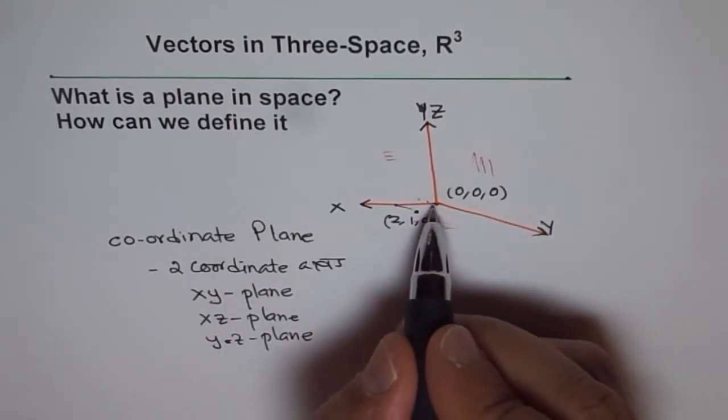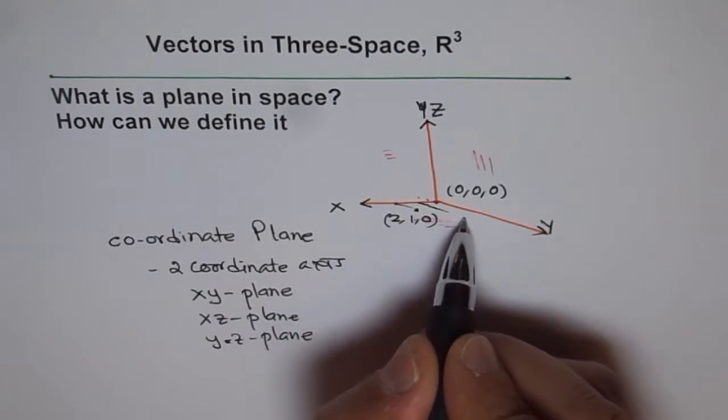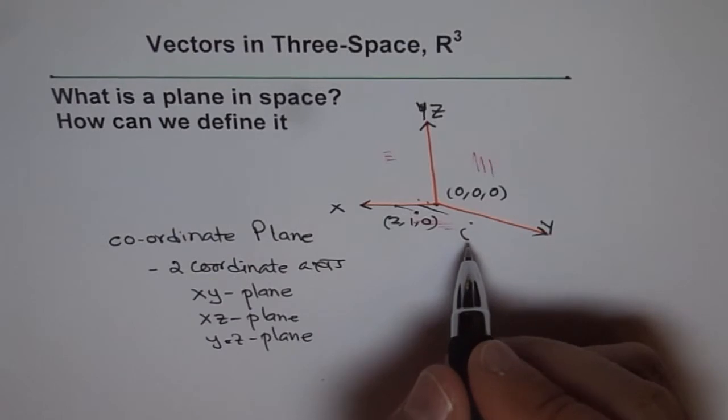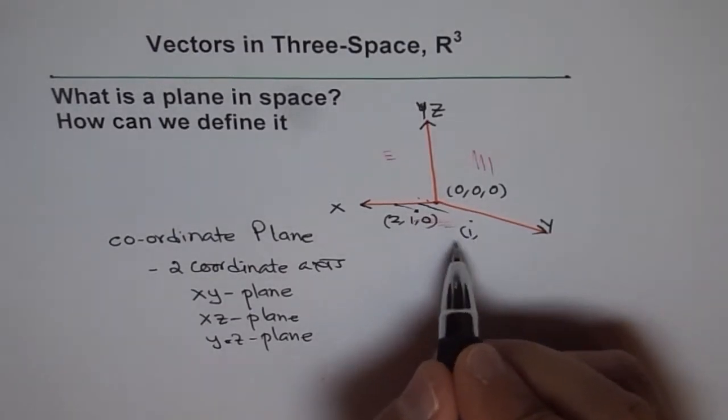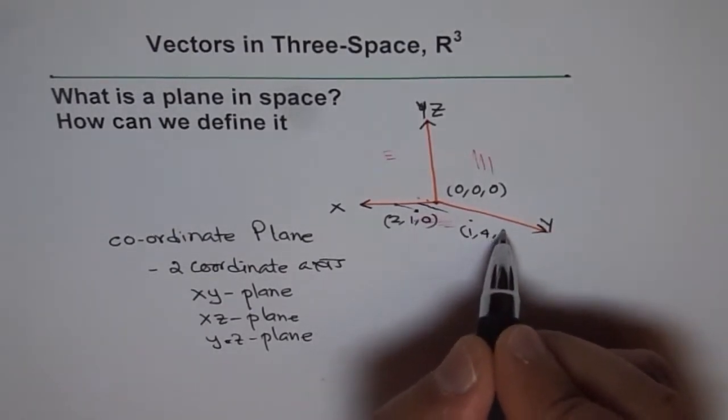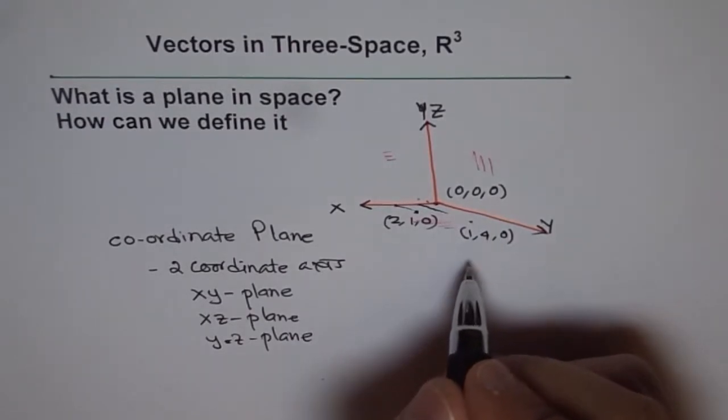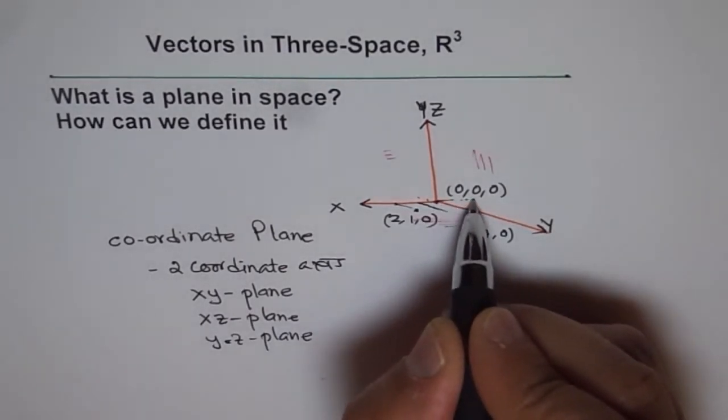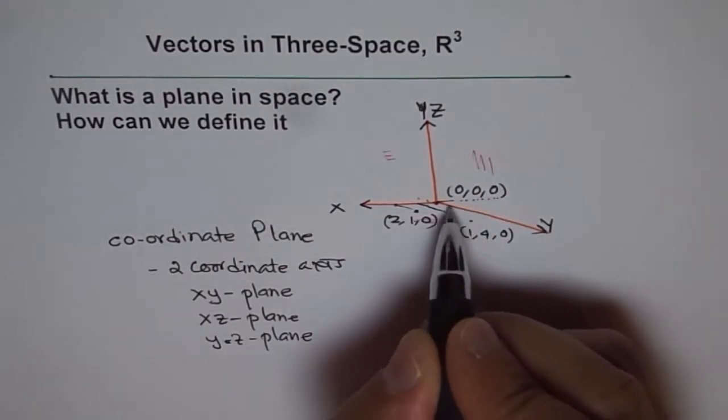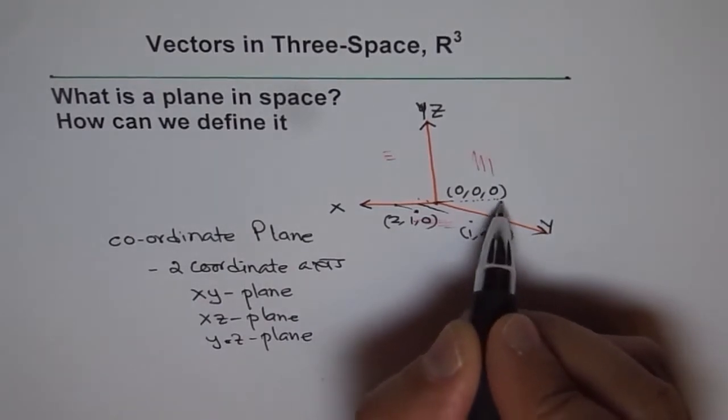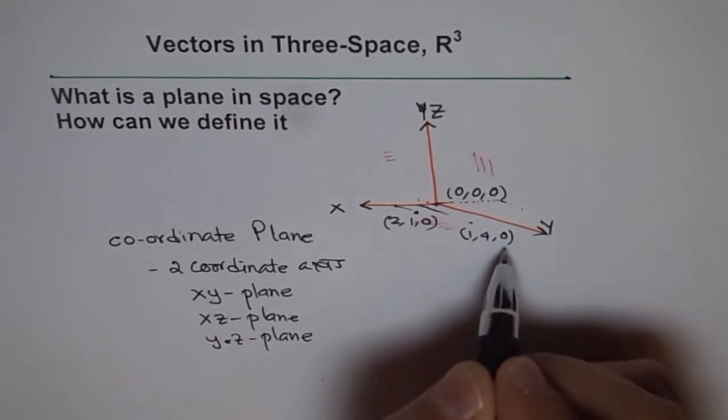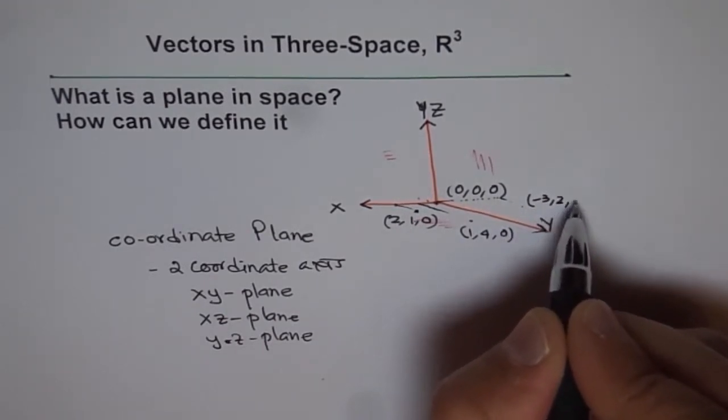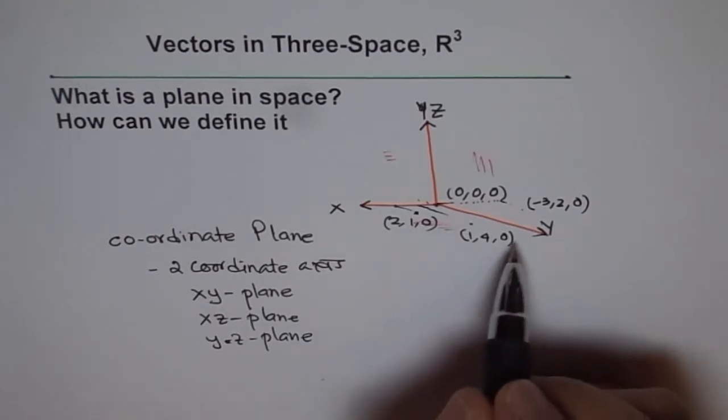Now let us consider this. I move one unit towards X and let's say four units towards Y. So my ordered triple is one for X and four for Y and zero for Z. Well, I could move in that direction also. That means I could go three units here along X but in the negative X direction and let's say two units towards positive Y. In that case, my location will be (-3, 2, 0). So what do I observe here?